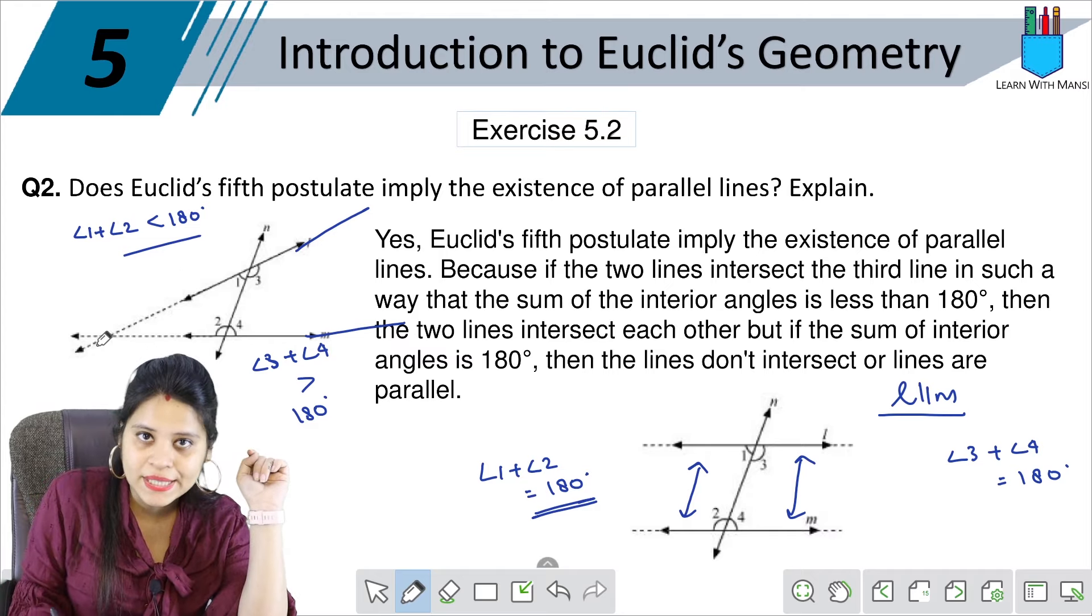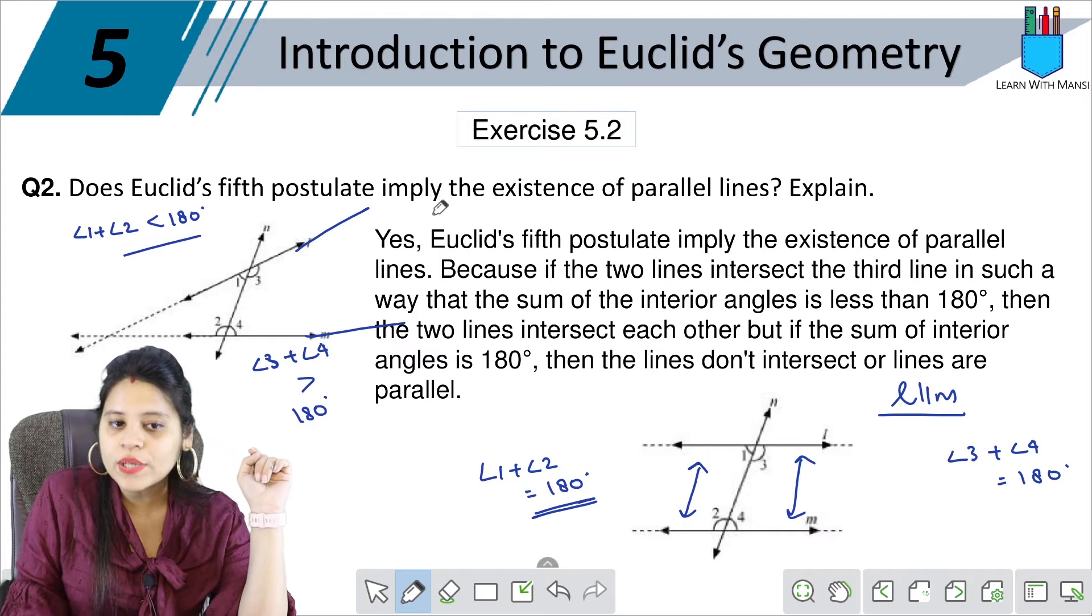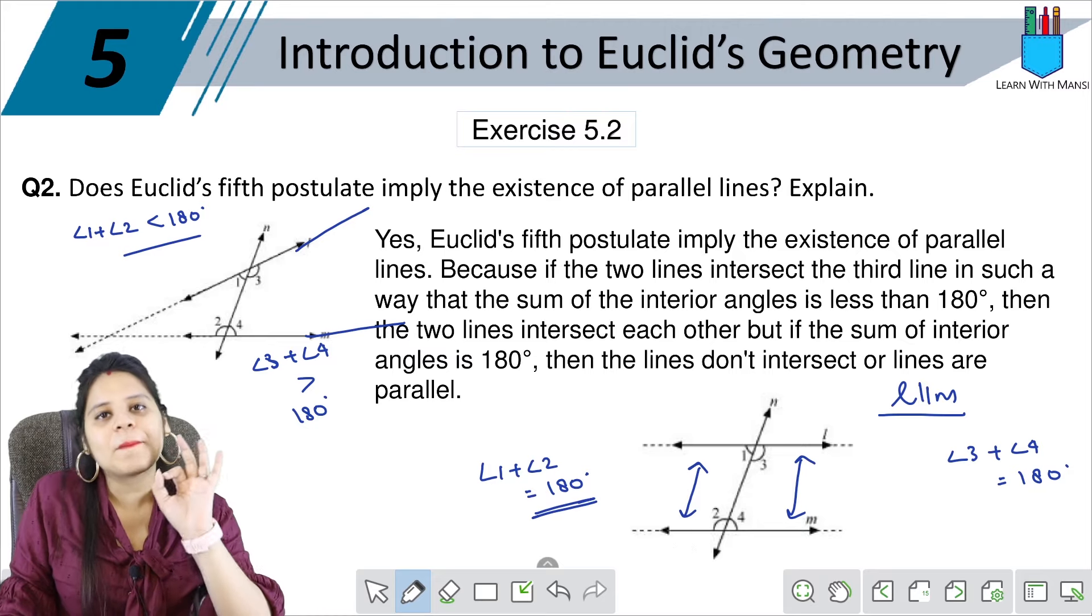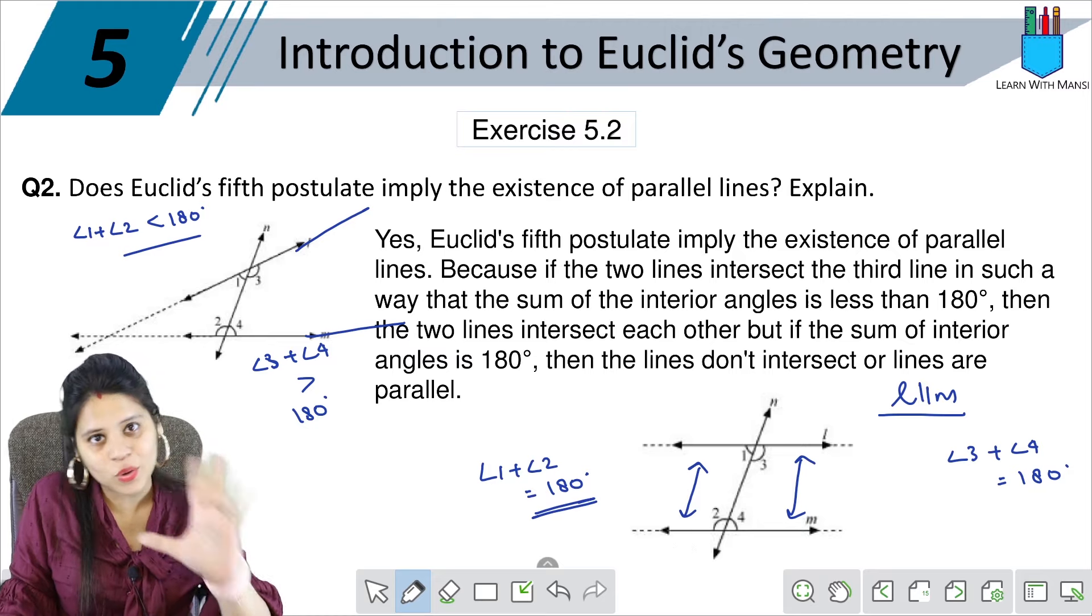If it is less than, then it will intersect. If it is more than, then it will go in different directions. If it is equal, then the lines are parallel. Okay? I hope you've come to understand.